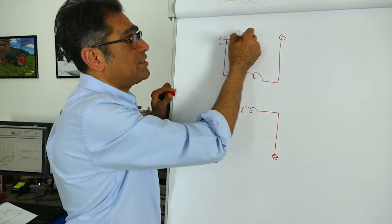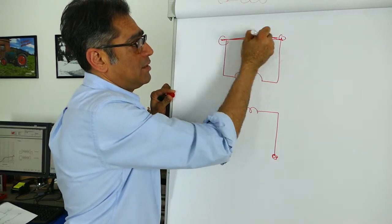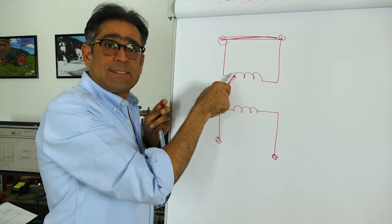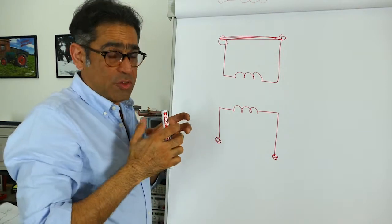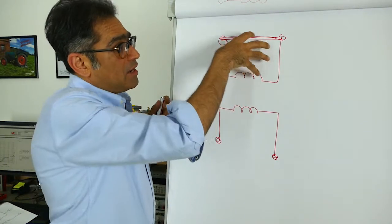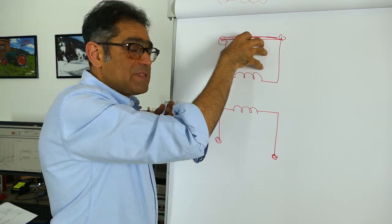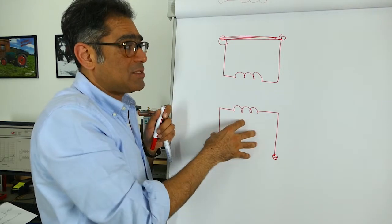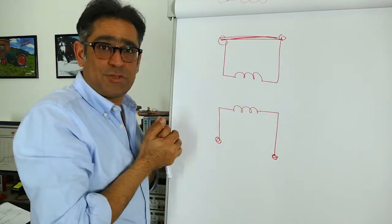Now if I short this here, given that these two coils are exactly the same number of turns and wound on the core, the flux generated in this should be equal and opposite to flux generated on this one according to Lenz's law, and therefore 100% of it should cancel.